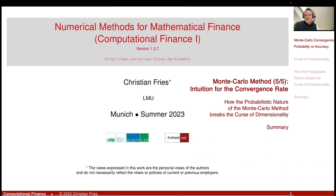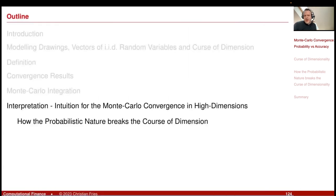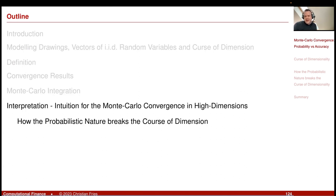Welcome to numerical methods. We are in a section on the Monte Carlo method, and we have almost completed the section. Now comes the summary, and also a small illustration of why Monte Carlo has this really nice property that it breaks the curse of dimensionality — that we have the same convergence rate in higher dimensions.